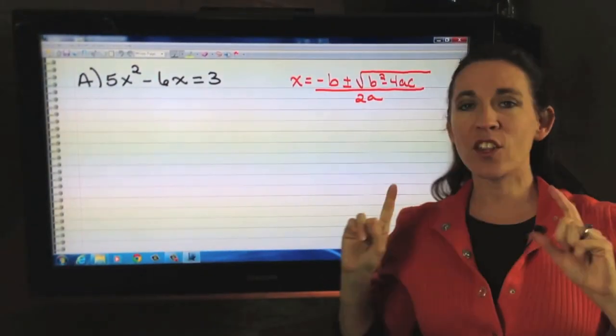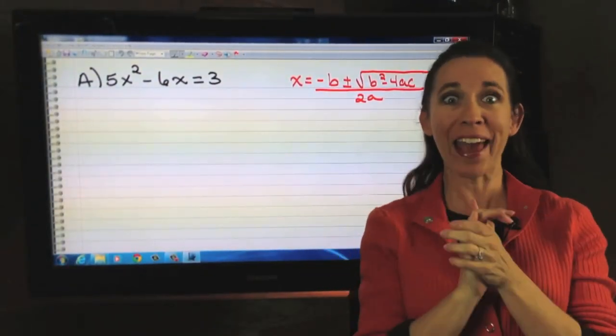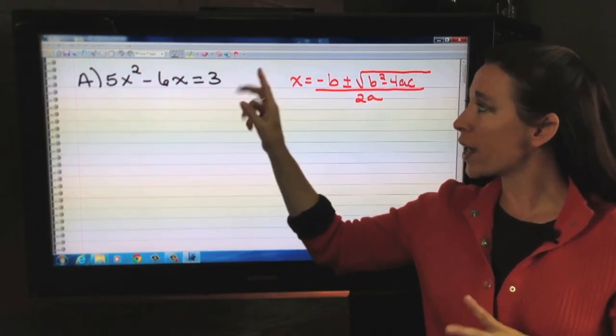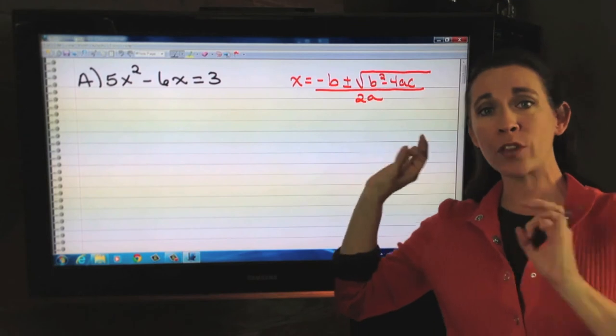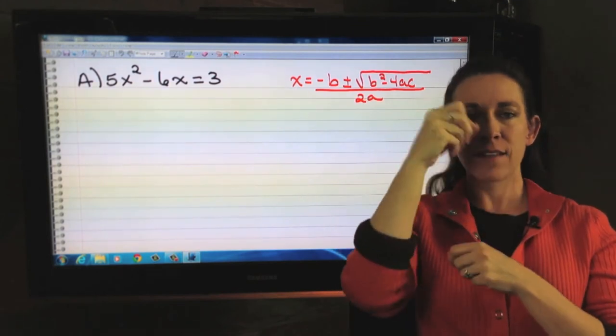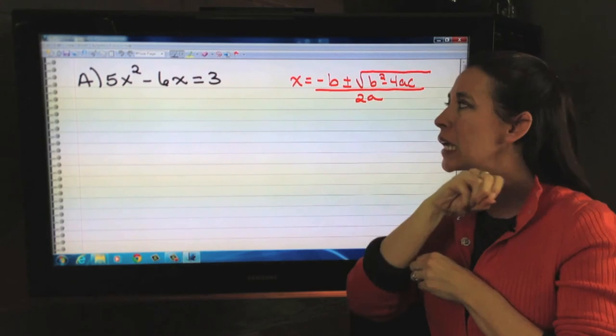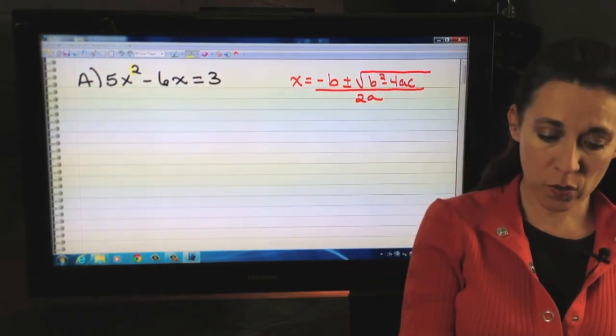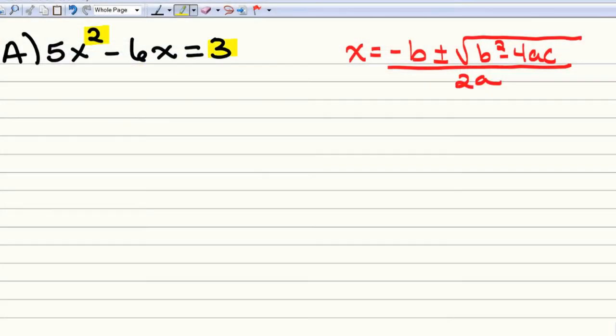Are you ready? Let's take a look. So, here we've got a quadratic equation. I went ahead and wrote down the quadratic formula. Remember, you want to have that physical memory, the touch memory, kinesthetic. Write it down. It's not set equal to zero. So, you may want to kind of make note of that. We need to change it. Set equal to zero. So, let's subtract three from both sides. So, we get 5x squared minus 6x minus 3 equals zero.